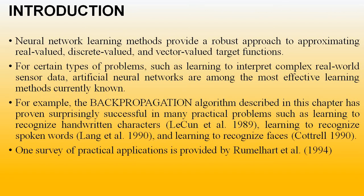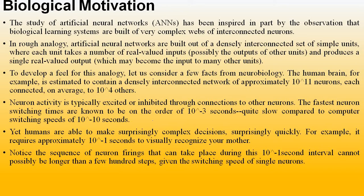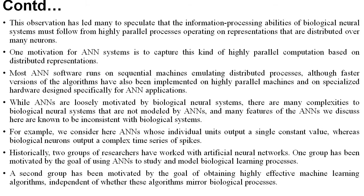I gave a short introduction about the Artificial Neural Network and what techniques or algorithms we are using in this neural network. One of the popular algorithms is the Backpropagation Algorithm. Then I discussed the biological motivation behind the neural network — what is the brain cell called a neuron, how many brain cells are there in the human brain, approximately how many are interconnected, and what is the switching speed for sending a message from one neuron to another, and how that switching speed compares to machine switching speed. I request all of you to go through the last video to understand the biological motivation behind the artificial neural network.